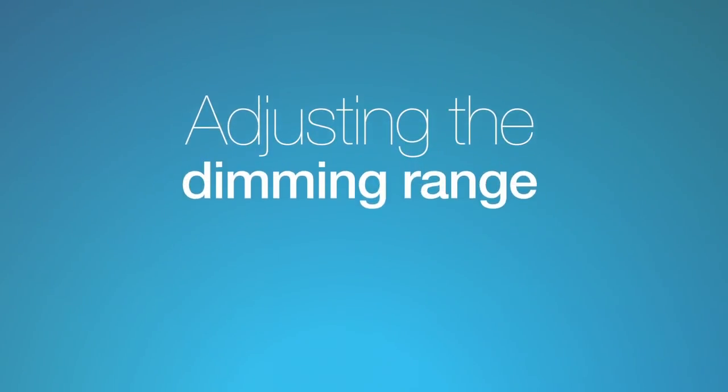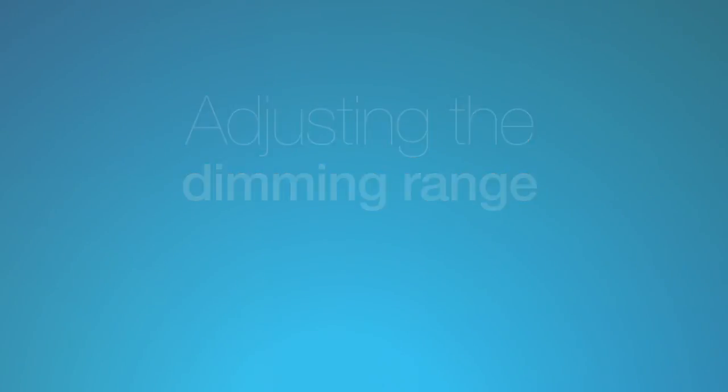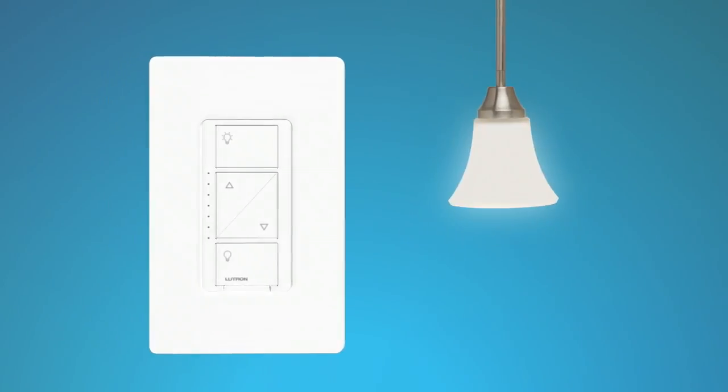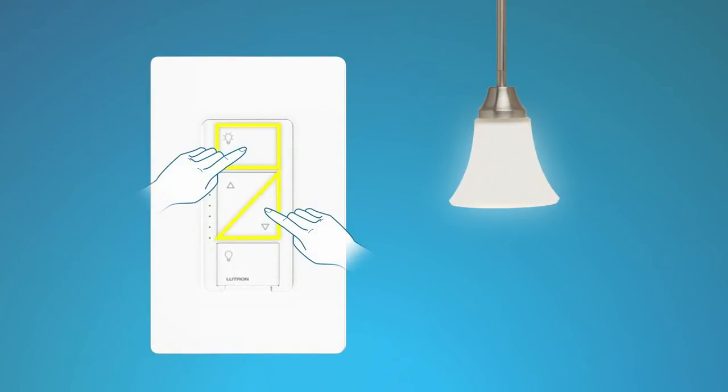Adjusting the dimming range. If dimmable LED or CFL bulbs turn off unexpectedly while dimming or flash, strobe, or flicker, adjusting the dimming range can help solve the problem. To begin adjusting the dimming range, press and hold the on and darker buttons on the dimmer for 6 seconds until an LED on the dimmer starts blinking. Then release the buttons.